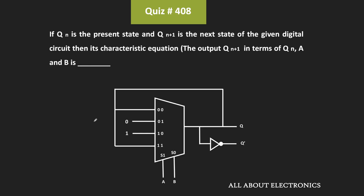Hey friends, welcome to the YouTube channel All About Electronics. In this question, we have been given a digital circuit and we have been asked to find the characteristic equation of the given circuit. Here, qn is the present state of the given circuit while qn+1 is the next state. This characteristic equation shows the next state of the circuit in terms of the present state and the current inputs.